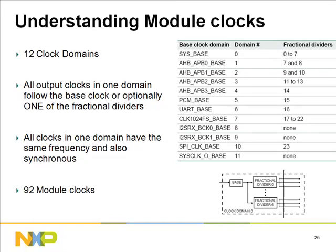The spreading stage governs generation of the 92 module clocks. Each base clock results in a separate clock domain with fractional divider registers. For example, the Sysbase clock has 8 fractional dividers, and AHB_APB0_base has 2 fractional dividers. All output module clocks in one domain follow the same base clock or optionally one of the fractional dividers, meaning they share the same frequency and are synchronous.